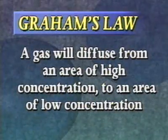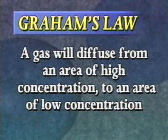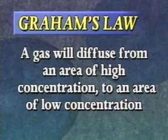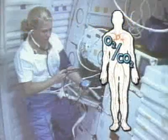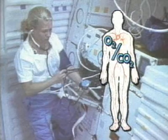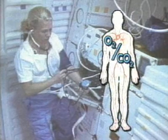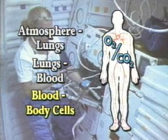Graham's Law states that a gas will diffuse from an area of high concentration to an area of low concentration. This law explains the transfer of gases — mainly oxygen and carbon dioxide — between the atmosphere and lungs, lungs and blood, and blood and body cells.